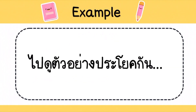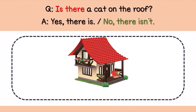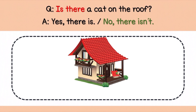เรามาดูตัวอย่างประโยคค่ะ ถามว่า Is there a cat on the roof? มีแมวอยู่บนหลังคาไหม ในภาพไม่มีแมวเลย ถ้ามีนักเรียนก็ตอบได้ว่า Yes, there is แต่ถ้าไม่มีก็ตอบว่า No, there isn't นักเรียนสังเกตความแตกต่างนะคะ คำว่า There isn't มาจากคำว่า is not นั่นเองค่ะ